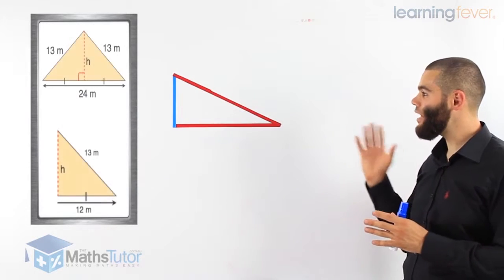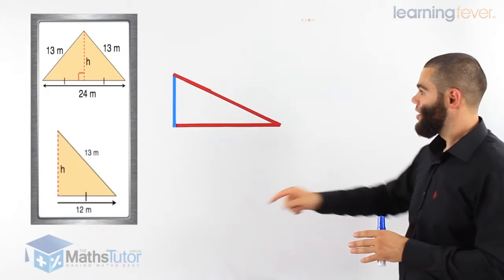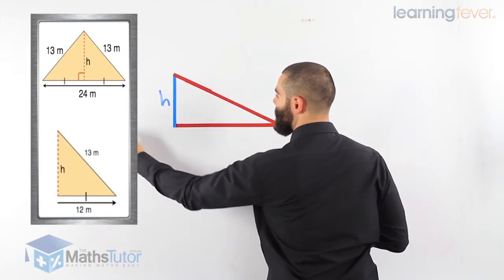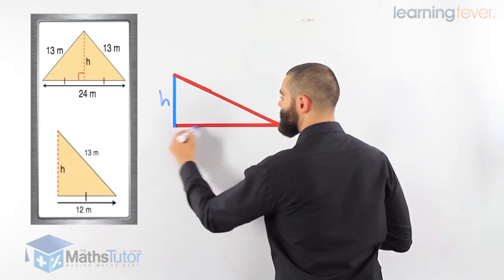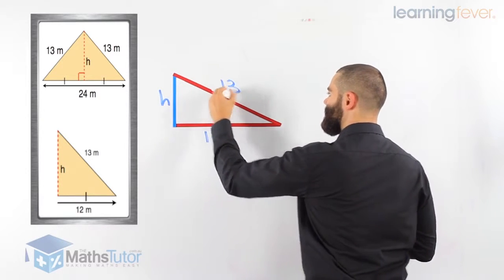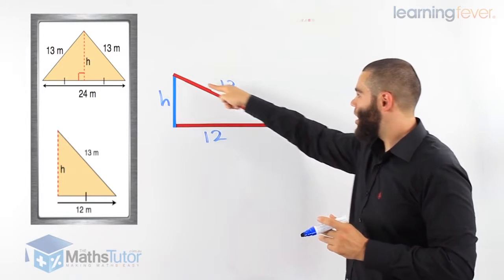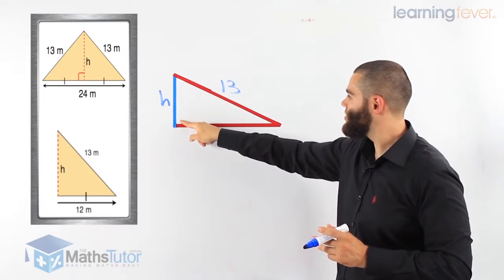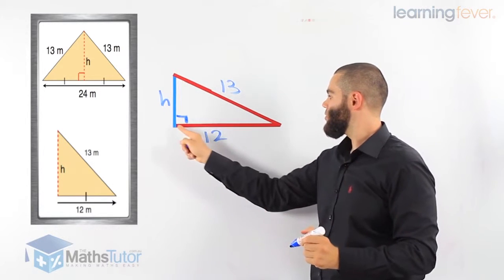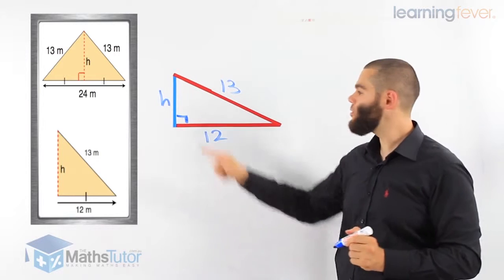So now we have our diagram — this is half of our roof. The blue line is our missing height H. The span was a total of 24; we cut it in half and now have 12. Our slant height is 13, which is opposite the right angle, making it our hypotenuse. Our right angle is there, and the short side along the bottom is 12 — half of our span.